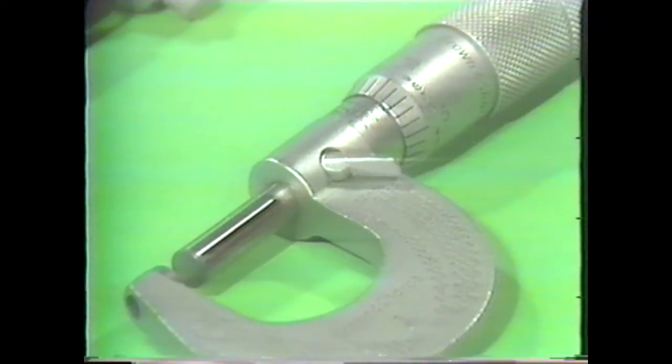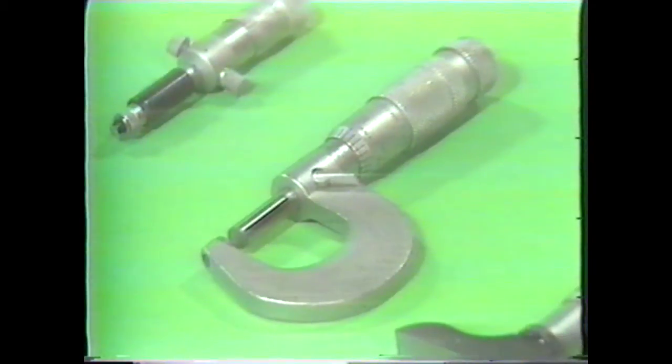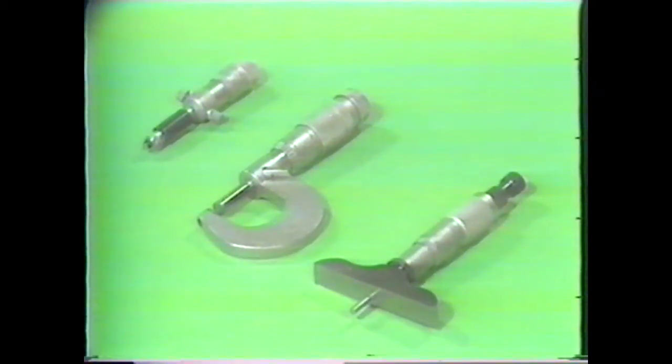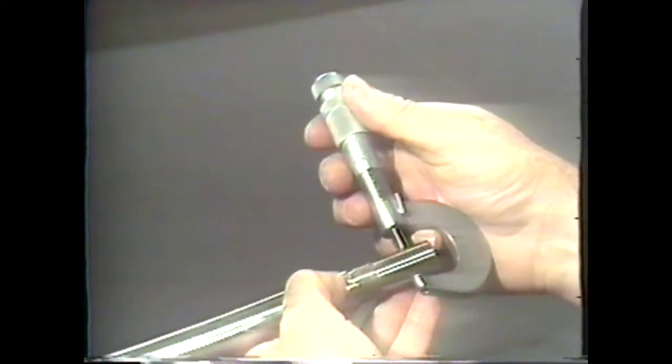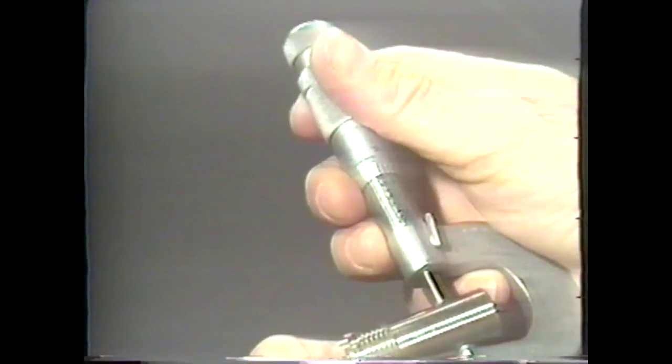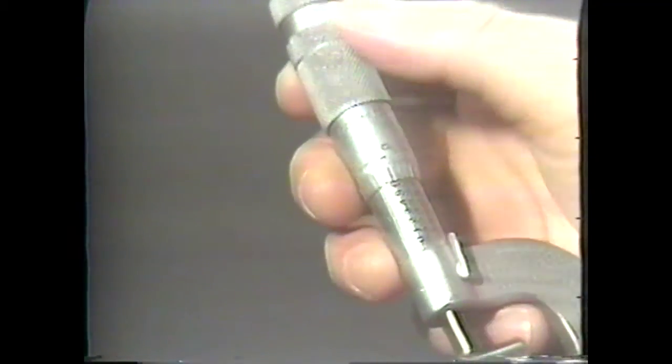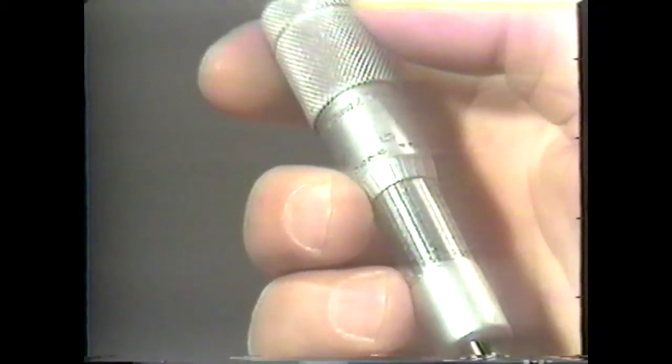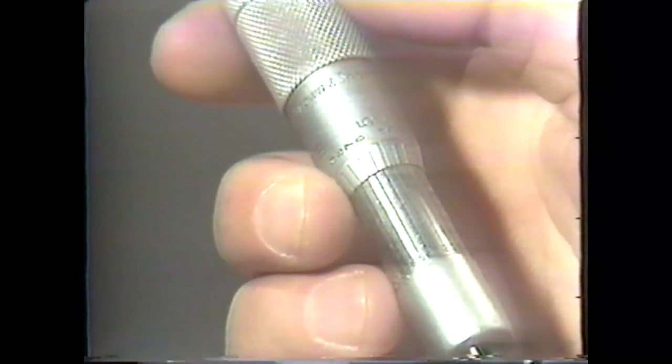The most common precision measuring tools you will find in the machine shop are the micrometer calipers. These instruments are made in a wide variety of types and forms for inside, outside, and depth measurements. Micrometer calipers are designed to measure to the nearest one thousandth of an inch. However, when equipped with a vernier scale, they can measure to the ten thousandth of an inch.